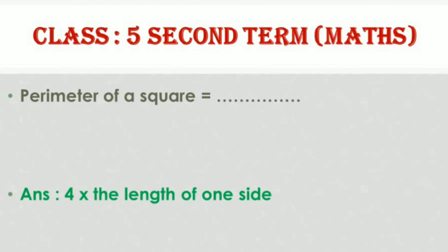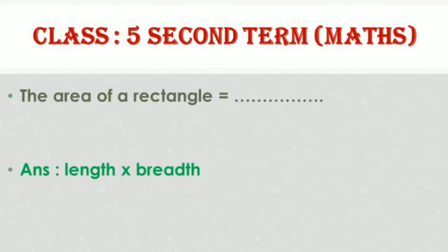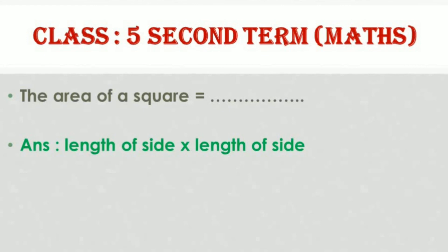The perimeter of a square is equal to 4 times the length of one side. The area of a rectangle is equal to length times breadth.